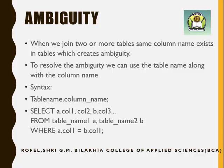Ambiguity means a kind of confusion. This confusion arises because the same column exists in two tables. We can resolve this ambiguity by joining the table name and column name. And if we want to reduce the burden of typing the table name again and again, then we can use a table alias.